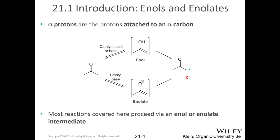We're going to spend most of this chapter with enolates. The idea is that we're going to pull off one of those alpha hydrogens and replace it with some other group — not particularly difficult, but very useful for building larger molecules, including a lot of the important ones we'll deal with.